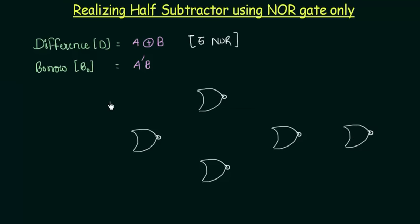Now let's connect them. This is input A, and this is input B. A will be one input to this gate, and the second input will be B.